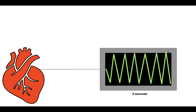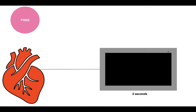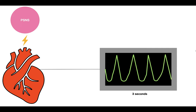So how would the heart rate be affected by the parasympathetic nervous system? Well, if we brought the parasympathetic nervous system in and it interacts with the heart, what we would see is that in three seconds the heart would beat four times. Four divided by three is 1.33 — multiply that by 60 and you get a heart rate of 80 beats per minute. So when the parasympathetic nervous system came in, the heart rate decreased from 120 to 80. The parasympathetic nervous system is going to decrease the heart rate.